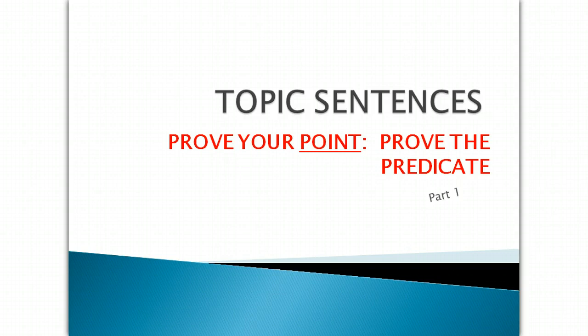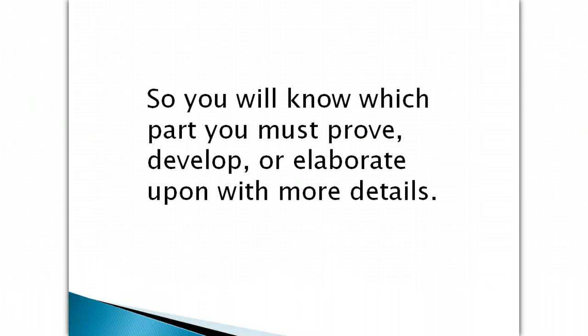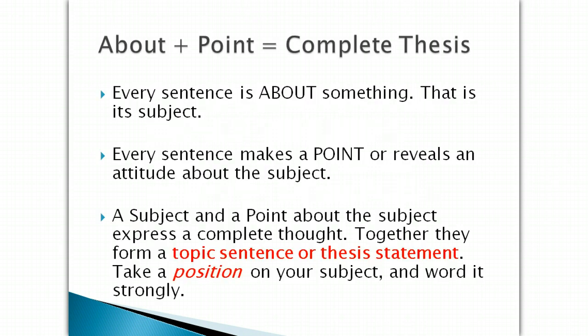The focus for today is to talk about topic sentences — that they have to prove your point, or prove the predicate, in the rest of the paragraph if we're talking about a topic sentence, or the rest of the essay if we're talking about a larger essay. I call this the about-point method for analyzing any topic sentence. You do this so you will know which part of the sentence you must prove, develop, or elaborate upon with more details. About is the subject and point is the predicate, and those two together equal a complete thesis statement or a complete topic sentence.